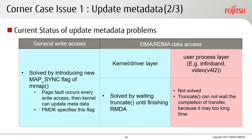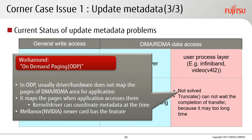For the general write access case, it was solved by introducing a new MAP_SYNC flag for mmap — a page fault occurs on every write access so the kernel can update metadata, and PMDK already uses this flag. For DMA or RDMA in the kernel or driver layer, it was solved by waiting for truncate until the RDMA finishes. A workaround for the user-process layer case is on-demand paging (ODP): the driver or hardware does not map pages for DMA/RDMA until applications access them, allowing coordination of metadata. Mellanox/NVIDIA network cards have this feature.